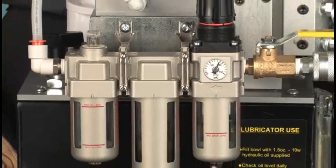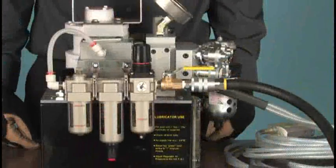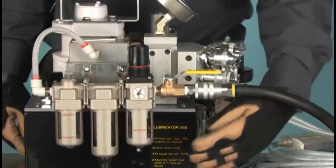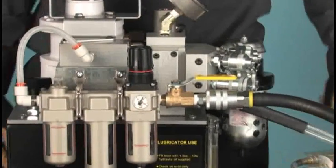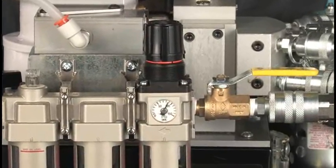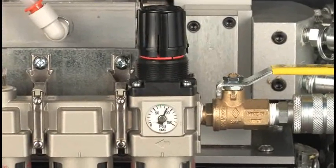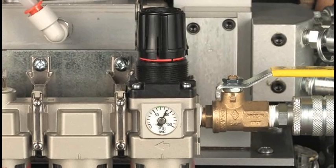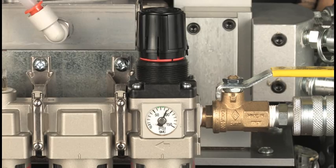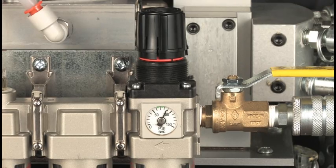The first unit after the main air valve is the pressure regulator. This is not to be confused with the regulator on the pump which controls hydraulic pressure. This one allows the operator to limit incoming air pressure to a range from 80 to 120 psi. About 100 psi is usually ideal. Lift up and turn the knob on top, in or out, to adjust the pressure on its gauge.